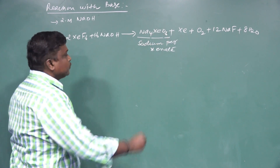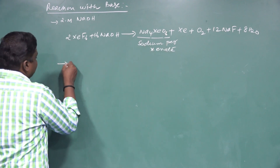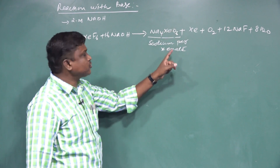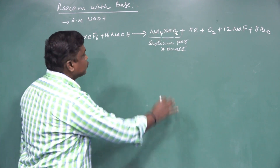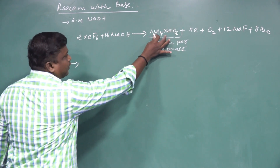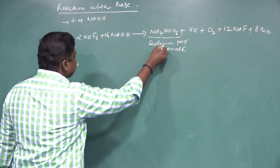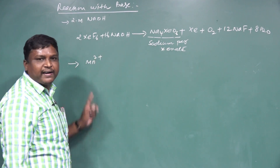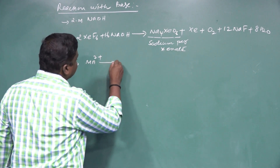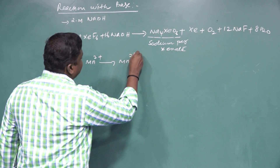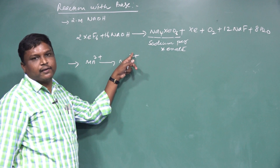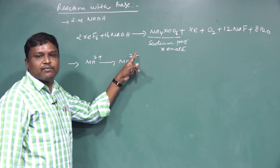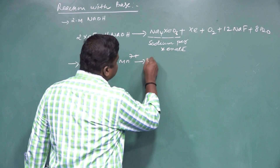Sodium perxenate has a powerful strong oxidizing property. Especially, it converts Mn2+ (manganese 2+) to Mn7+ (permanganate), in the absence of a catalyst.